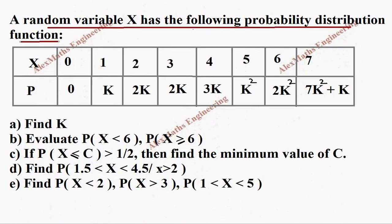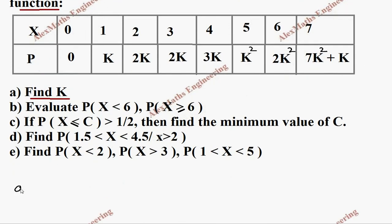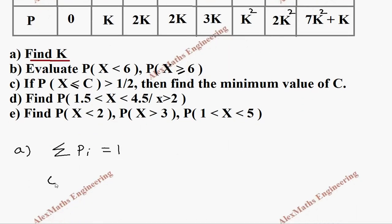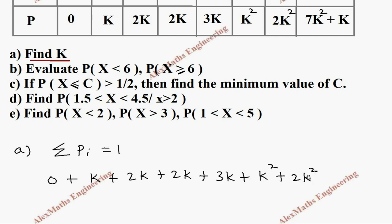In the first part, we are going to find the value of k. From the given table, we can take the summation. Since the summation of all probability values equals 1, we add all the probability values: 0 plus k plus 2k plus 2k plus 3k plus k² plus 2k² plus 7k² plus k, which equals 1.